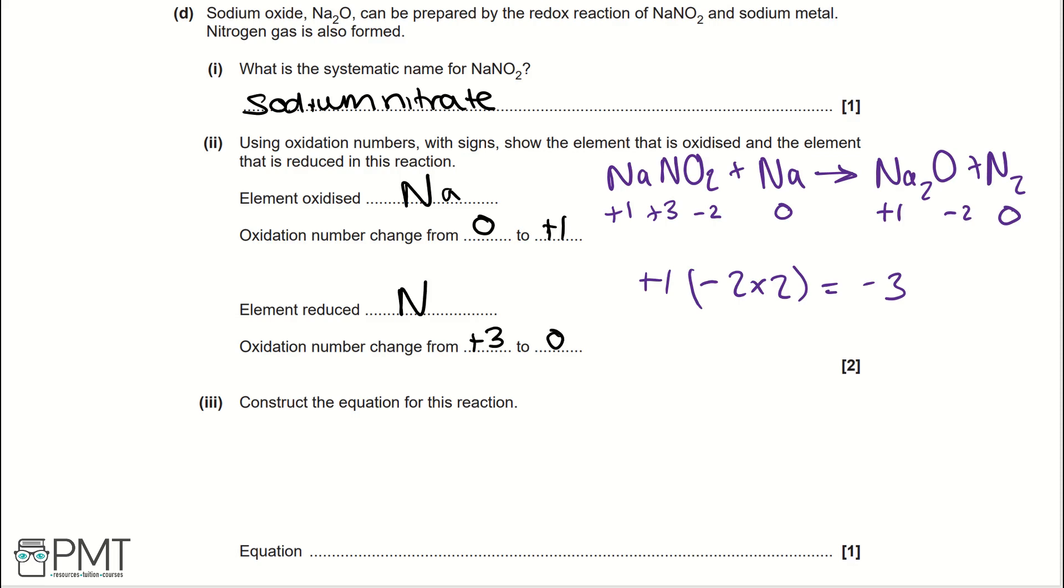For part 3, we need to construct an equation for this reaction. Well, we've already got part of an equation. We've got NaNO₂ plus Na going to Na₂O and nitrogen gas. But, we need to balance this equation, because we need 2 nitrogens for nitrogen gas. Then, 6 and 4, because we need to balance the oxygens and balance the sodiums.